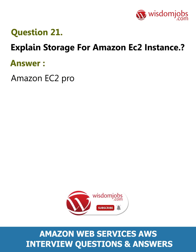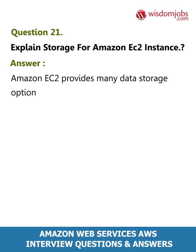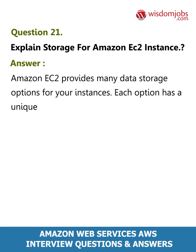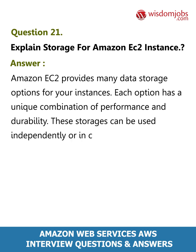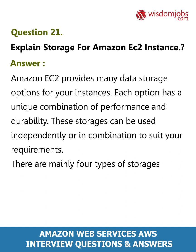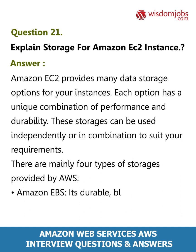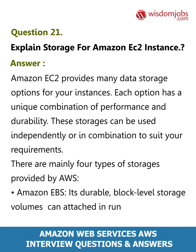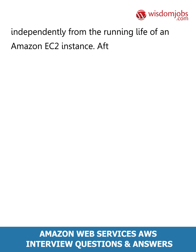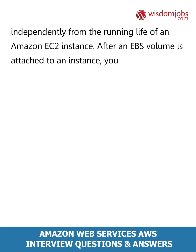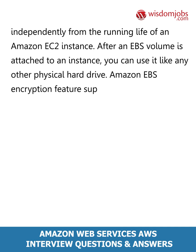Question 21: Explain storage for Amazon EC2 instances. Answer: Amazon EC2 provides many data storage options for your instances. Each option has a unique combination of performance and durability. These storages can be used independently or in combination to suit your requirements. There are mainly four types of storage provided by AWS. Amazon EBS provides durable block-level storage volumes that can be attached to a running Amazon EC2 instance. The Amazon EBS volume persists independently from the running life of an EC2 instance. Amazon EBS also supports an encryption feature.